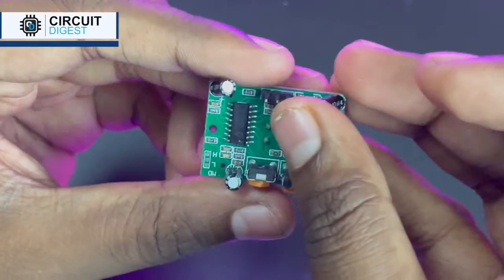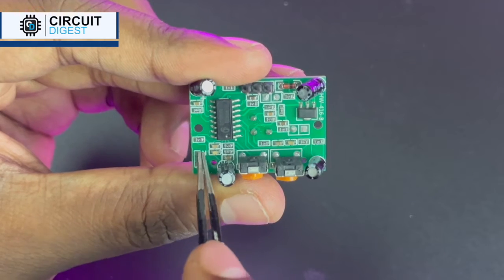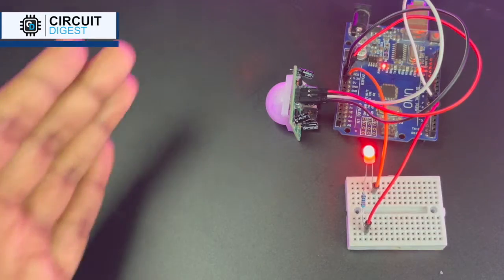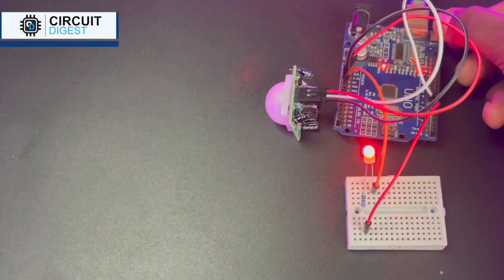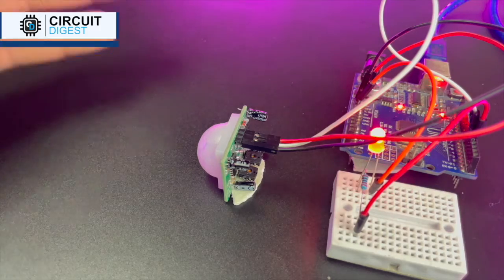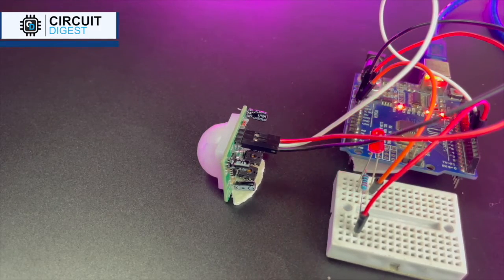On the back side, we have lots of components. The first is the jumper through which we can jump in L and H modes. In H mode, the output will be high once a person is detected and we need to reset it to make it low. In L mode, the output will go high once motion is detected and then it will go low again when there is no motion.